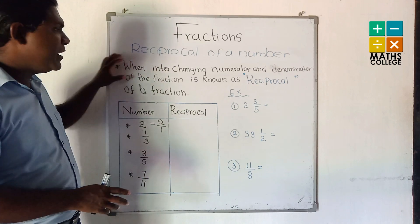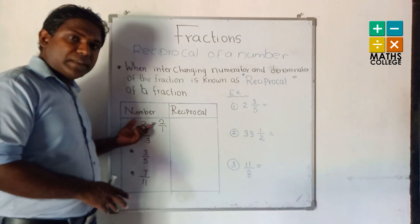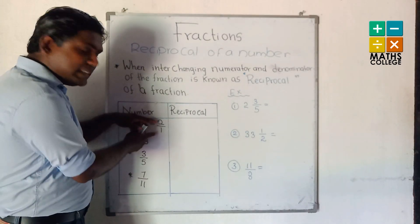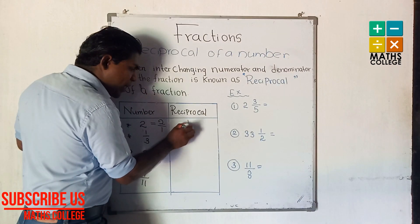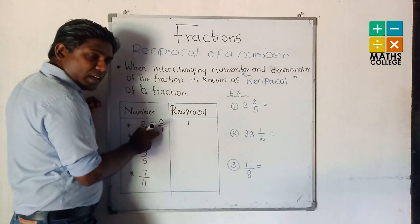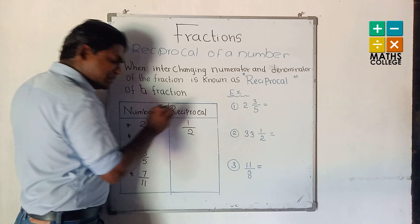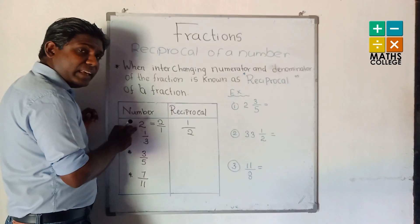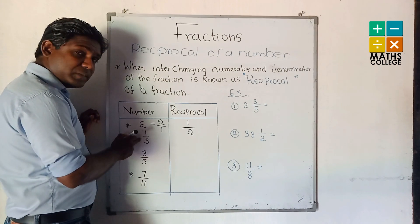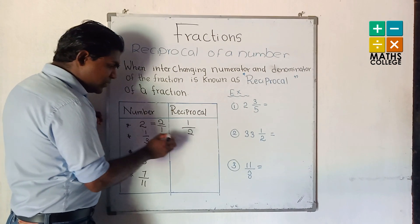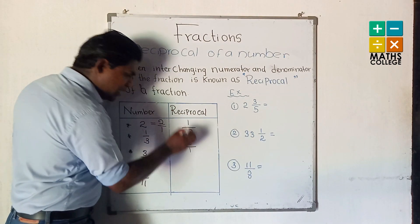According to our definition of the reciprocal, you can write the reciprocal of this number by interchanging numerator and denominator. For example, if the first number is 2, we write it as 2 upon 1. You write 1 as numerator and 2 as denominator. The reciprocal of 2 is 1/2. For 1/3: 1 is numerator, 3 is denominator — that means reciprocal is 3 upon 1.